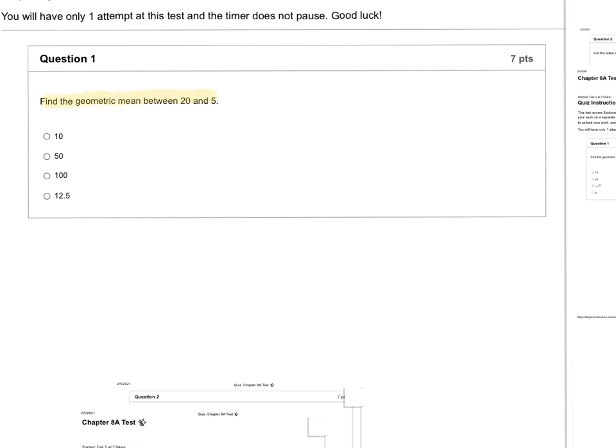If you remember geometric mean, then the equation is x equals the square root of A times B. This is my A, and this is my B. So let's plug those in. So x is equal to the square root of 20 times 5.